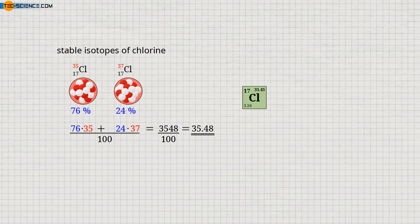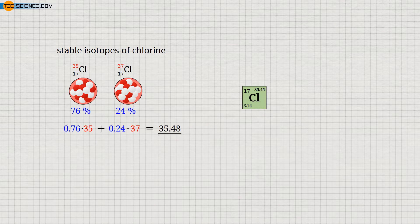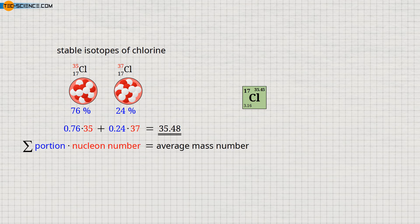Since protons and neutrons have almost identical masses and are about 2,000 times heavier than electrons, the total mass of an atom is determined by the number of nucleons alone. For this reason, the nucleon number is also called the mass number. To determine the average mass number, one simply multiplies the number of nucleons of each isotope by its corresponding proportion and then sums them up.